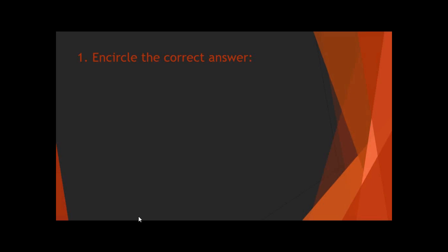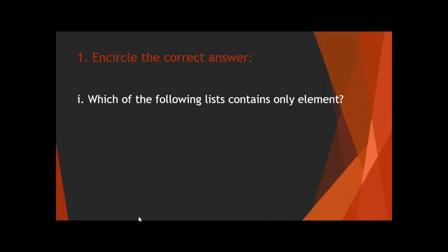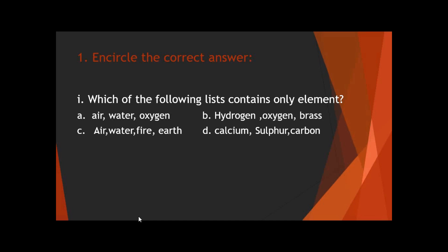Question number one: circle the correct answer. These are multiple choice questions. Which of the following list contains only elements? At the start of this chapter we learned about elements — elements are the simplest substances that contain the same kinds of atoms, and all atoms have the same atomic number. We have four options: A, B, C, and D.